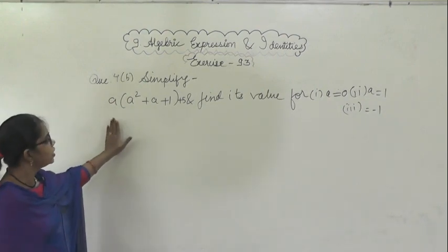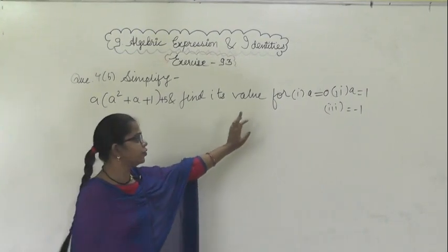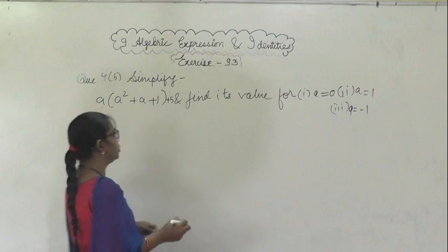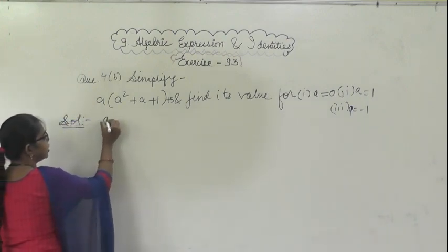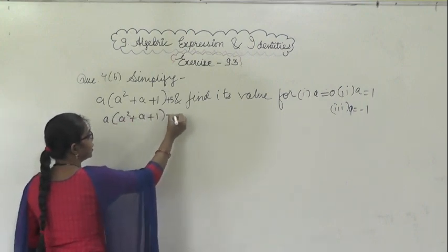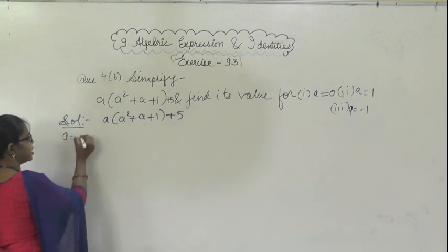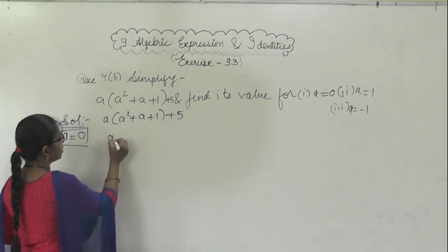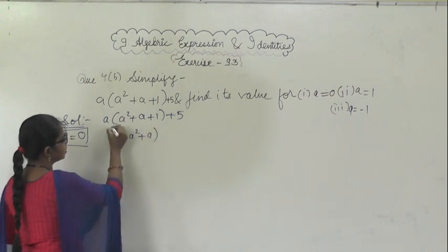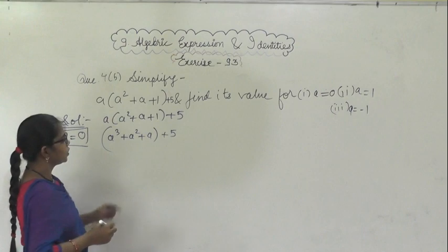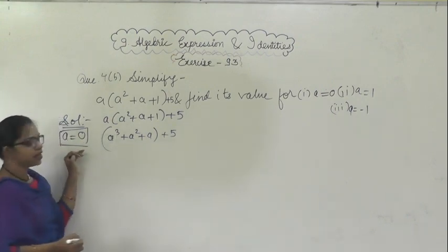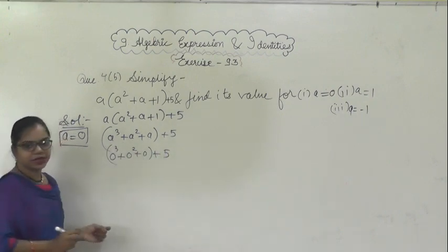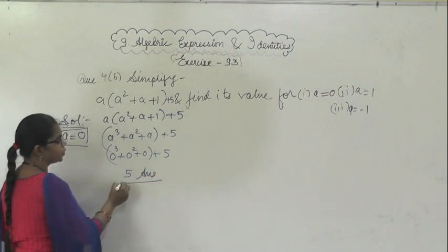Question 4 asks us to simplify the expression a(a² + a + 1) + 5 and find the value for a = 0, a = 1, and a = -1. First, multiply to get a³ + a² + a + 5. When a = 0: substitute 0³ + 0² + 0 + 5, the whole variable term becomes 0, so the answer is 5.